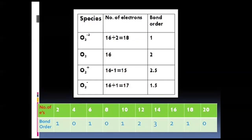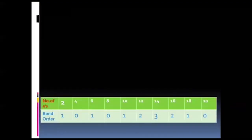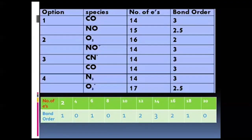If we keep following this method, let's attempt another question. NEET 2017 asked: which of the following pairs of species have the same bond order? Options are: CO and NO; O2 and NO⁺; CN⁻ and CO; and N2 and O2⁻. Here too we apply our mool mantra — first let's count the total number of electrons for each species.